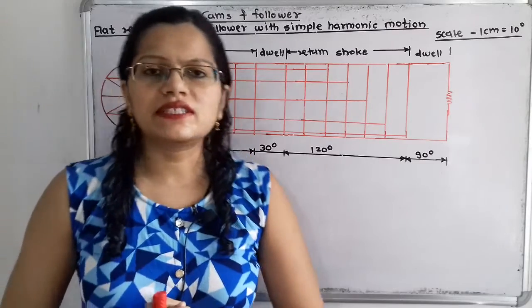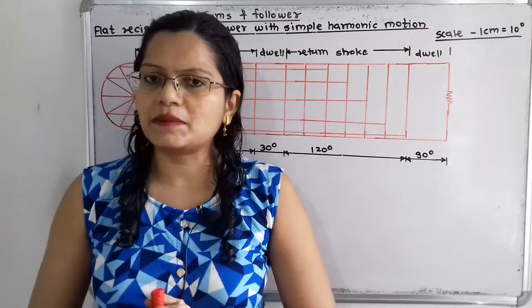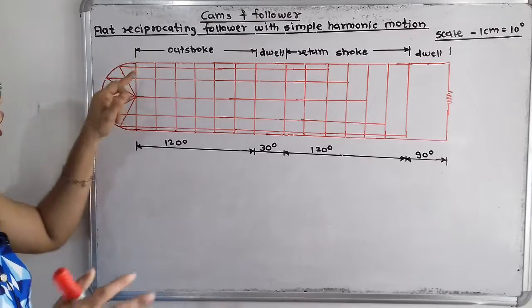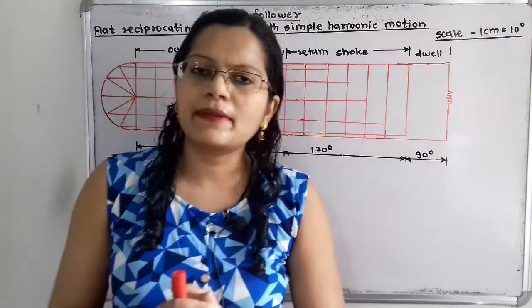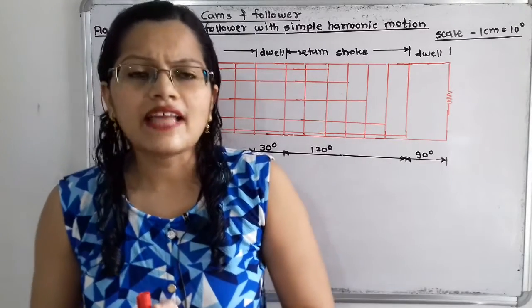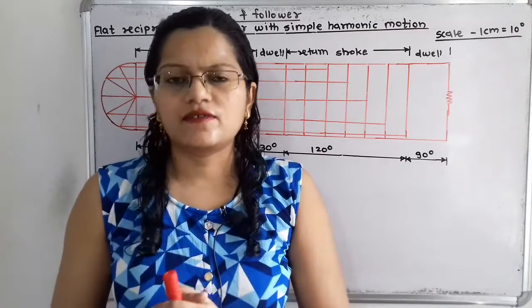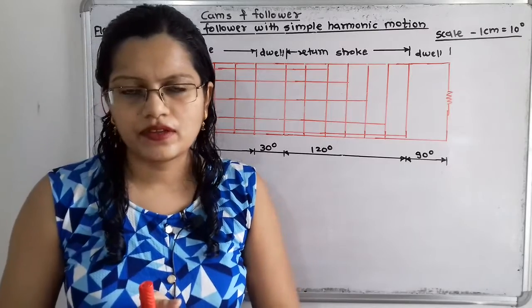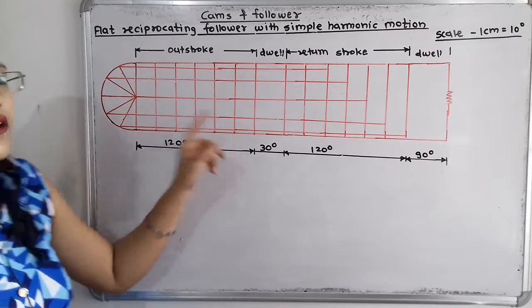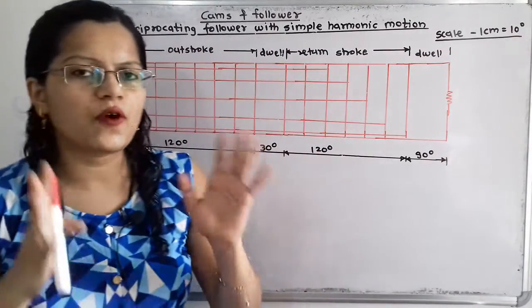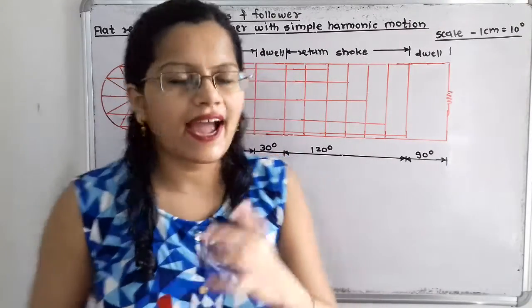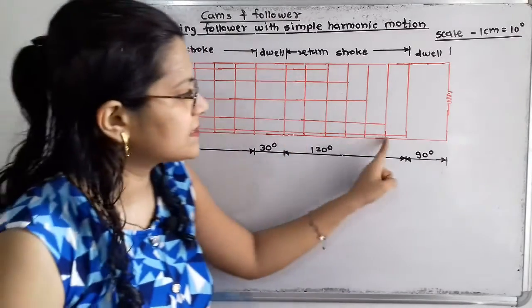The motion is simple harmonic motion. While drawing the displacement diagram, on one side of the graph we have to draw one semicircle. The total angle covered in a semicircle is 180 degree. We have to make even parts for both the outstroke and return stroke. The outstroke angle is 120 degree, so we will take 6 number of even parts. Therefore 180 degree divided by 6 equals 30 degree — each angle is 30 degree apart, giving 6 parts for outstroke as well as return stroke.